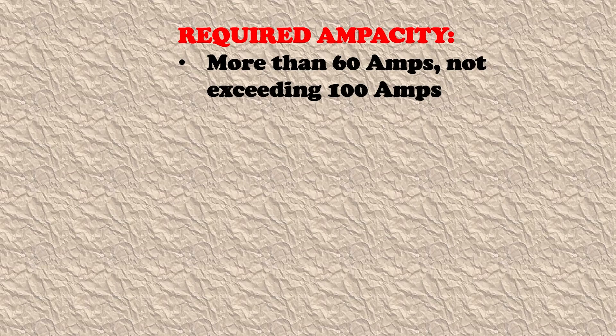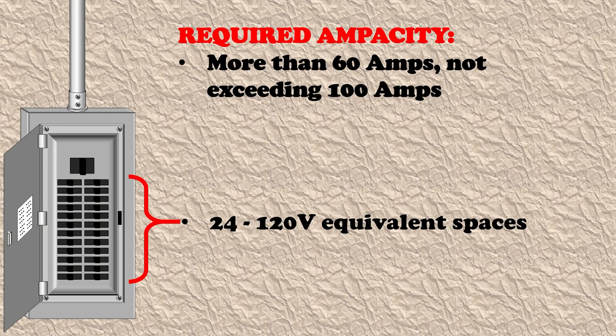The next situation is where we have more than 60 amps but not exceeding 100 amps, inclusive of that 100 amps. So if our calculated required ampacity falls above 60 and not exceeding 100 amps, we are required to have 24 of these 120-volt single pole equivalent spaces in this panel. Again, it's not important whether there is a central electric furnace provided for or not — the code does not stipulate that in this range.